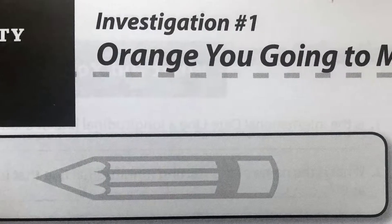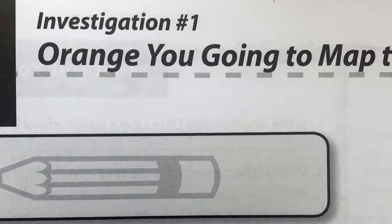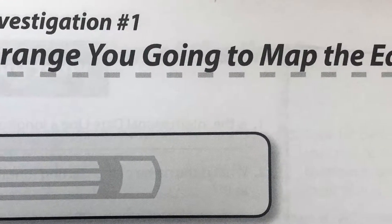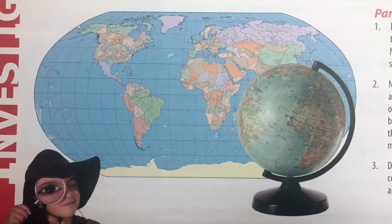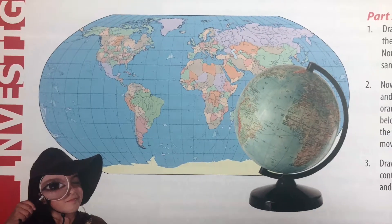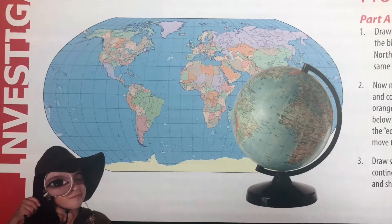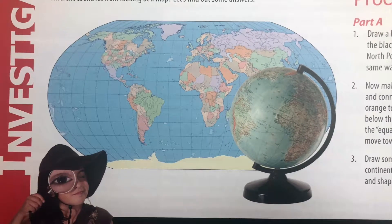Have students read Think About This on page 6 and then find the countries of Greenland and Togo on a world globe and a flat world map.